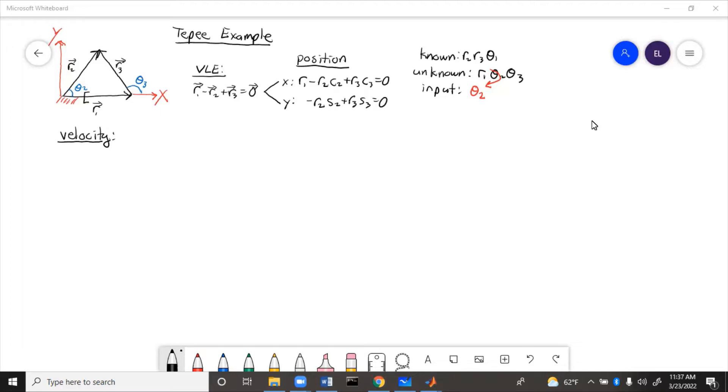So to do velocity, we will take the derivative of position and then we'll be able to put it in matrix form and solve for the unknowns. R1 is going to have a dot because the length changes. Basically both of the unknowns change. So R1 will have the dot and then we'll have to use chain rule for the angle derivatives.